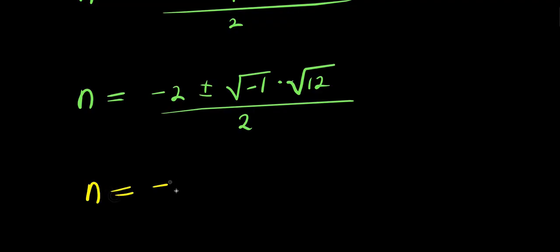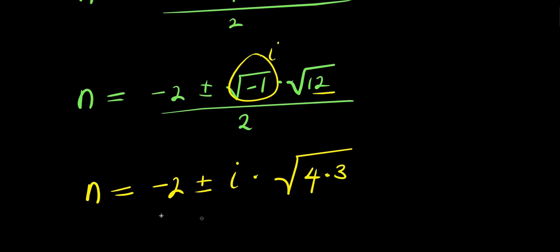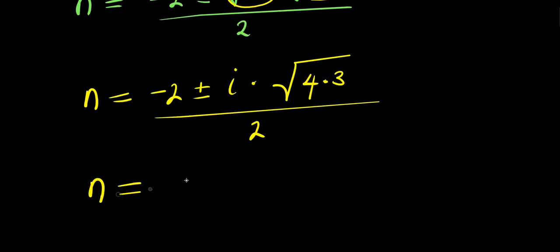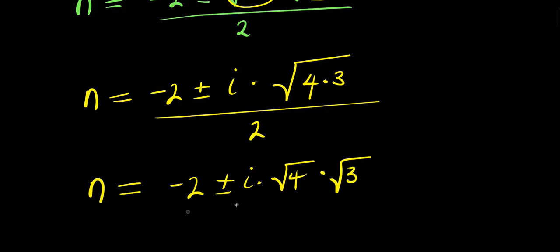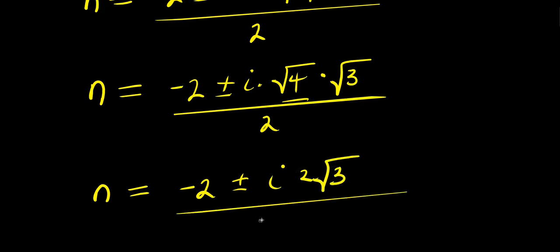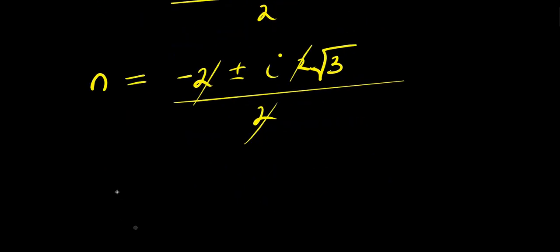Since square root of negative 1 is i, we have n equals negative 2 plus or minus i times square root of 12. Expressing 12 as 4 times 3, we get i times square root of 4 times square root of 3, which is 2i√3. So n equals negative 2 plus or minus 2i√3, divided by 2. The 2s cancel, giving n equals negative 1 plus or minus i√3.